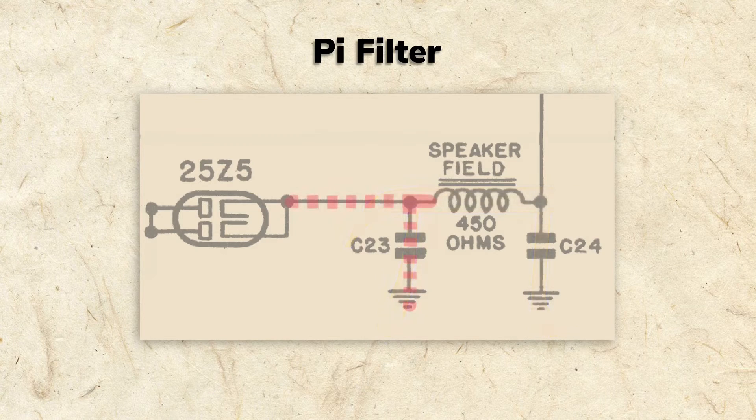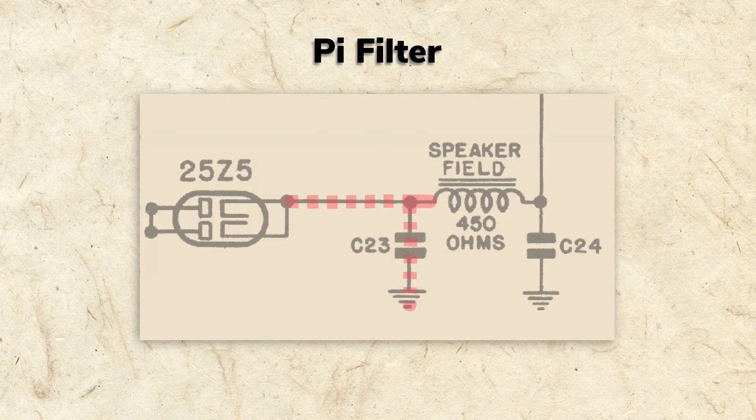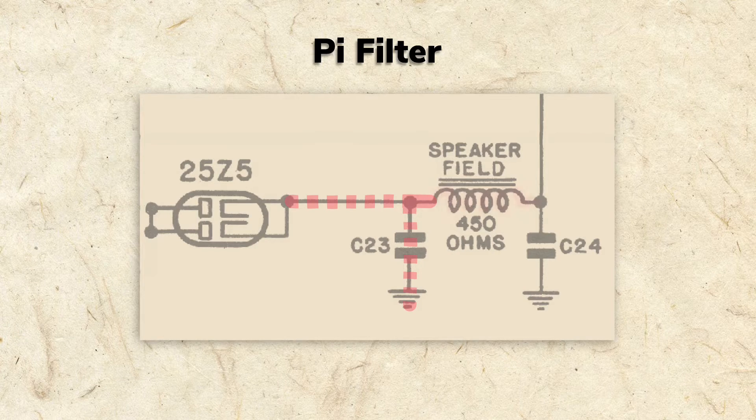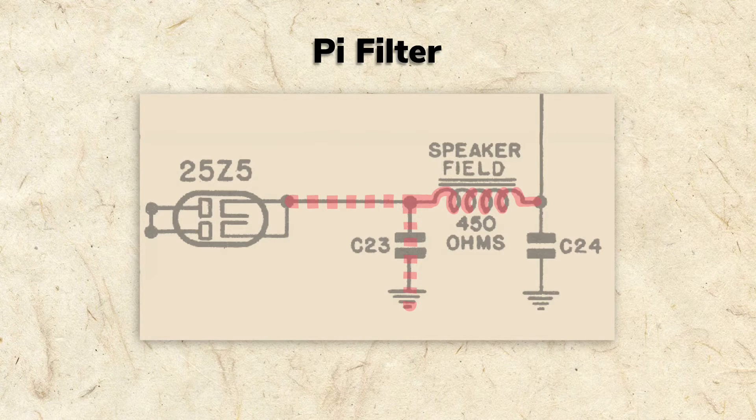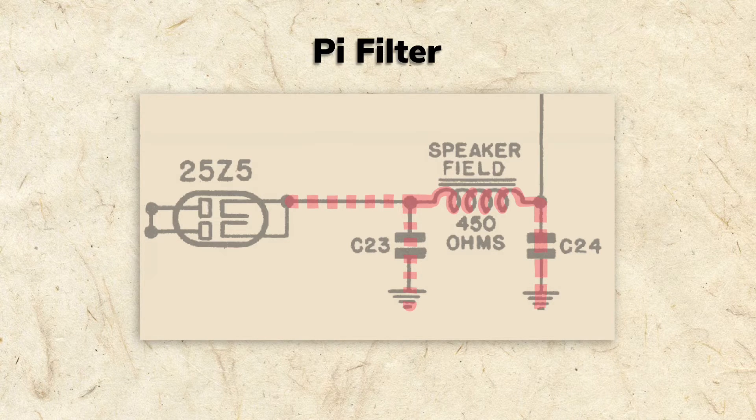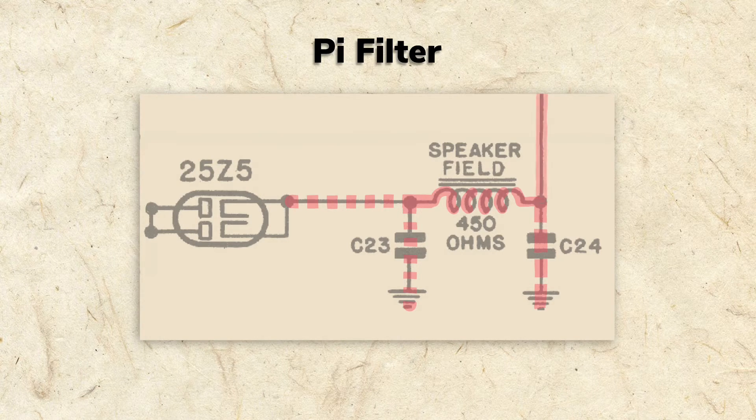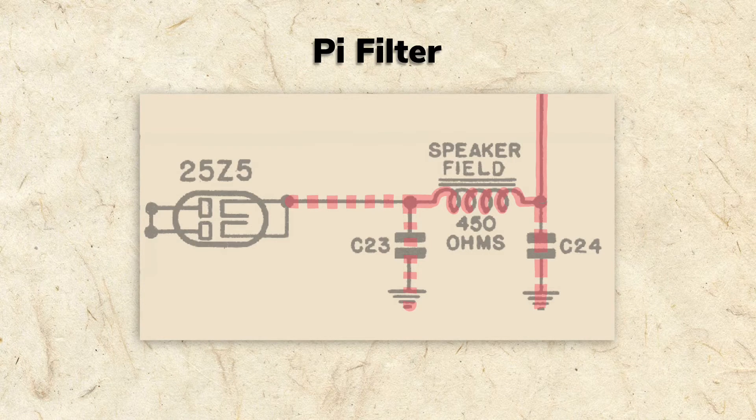The pulsing DC from the rectifier is first filtered by C23 as we've discussed. It then runs through the field coil for further filtering. C24 finishes the job with a third level of filtering, providing a smooth DC signal to power the radio.